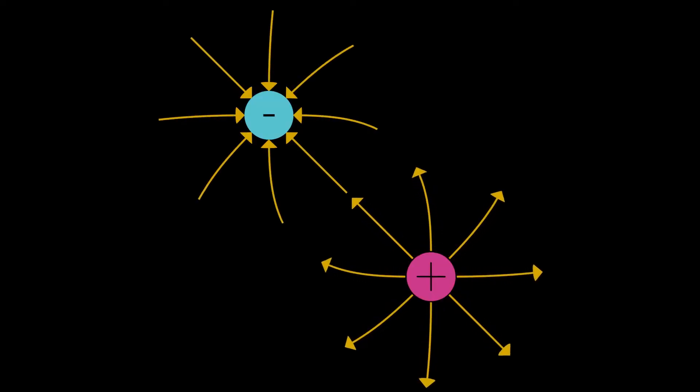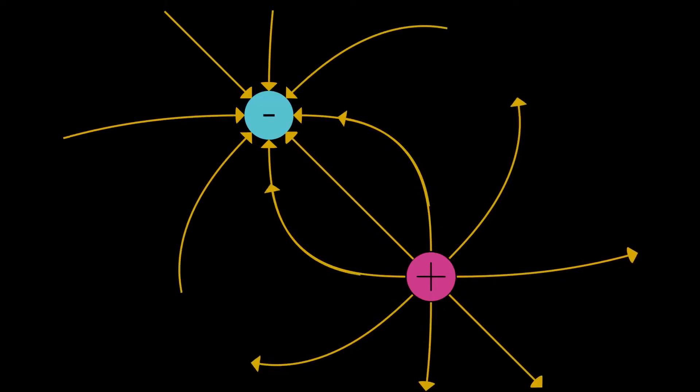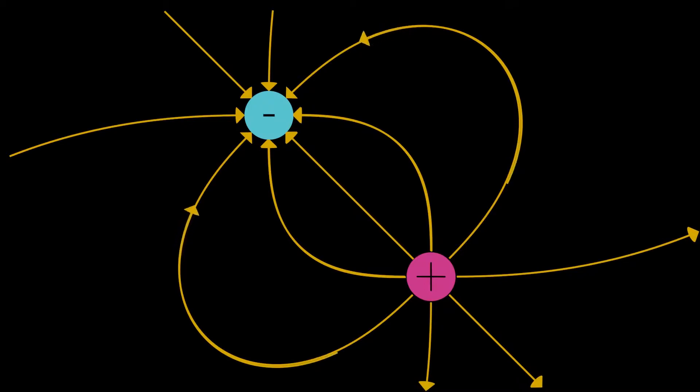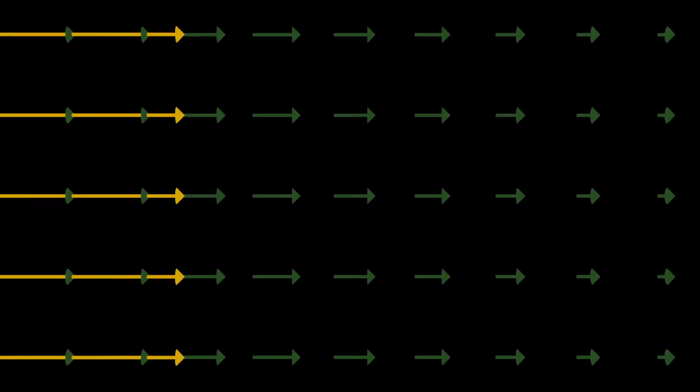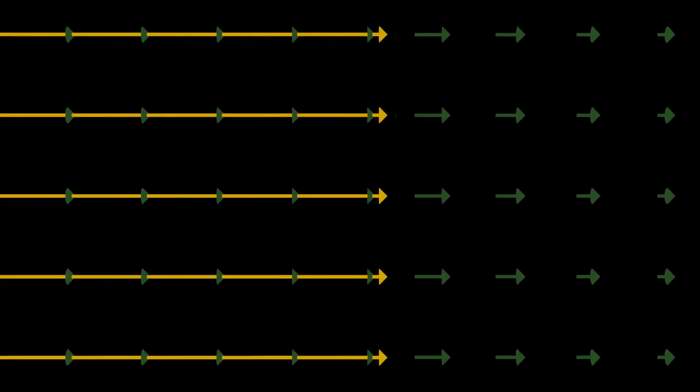In one of the videos in the previous module, we talked about this idea of electric field lines — the idea that we can visually represent the behavior of the electric field in space by drawing field lines that are tangent to the electric field at all points they touch.